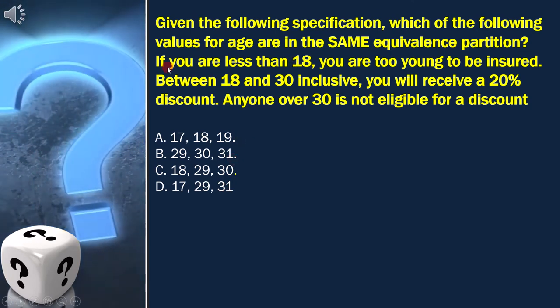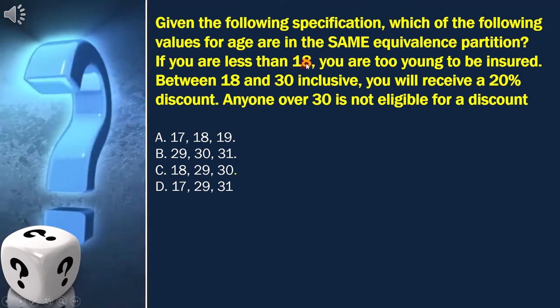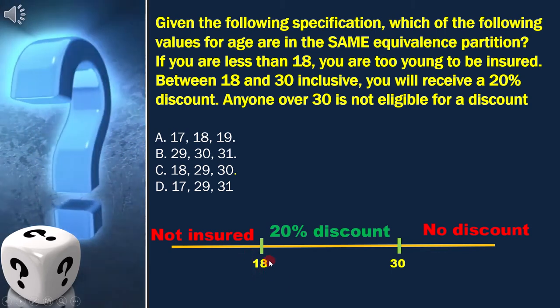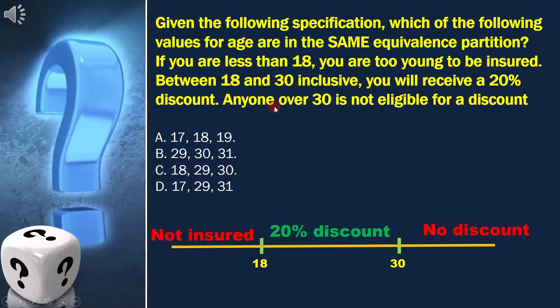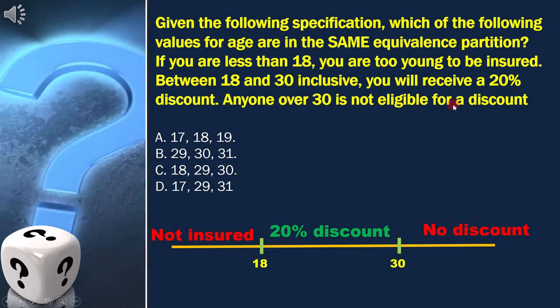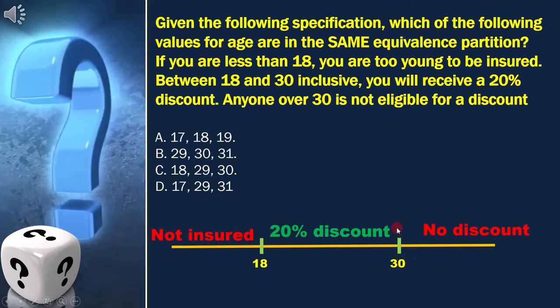As per the question value, less than 18 are not insured. That means 18 is the lower boundary. As per the question, anyone over 30 is not eligible for a discount. That means 30 is the upper threshold.